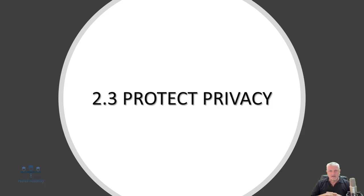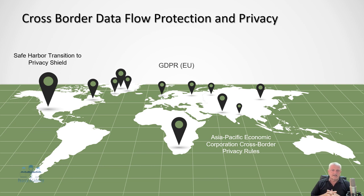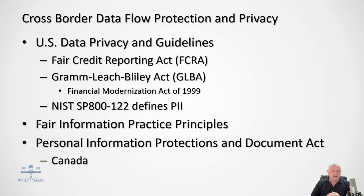Protecting the privacy of assets becomes quite difficult from a global perspective. For cross-border data flow protection and privacy: in the US, there is the Safe Harbour transition to the Privacy Shield; in the EU, the Data Protection Act (DPA) evolved into the GDPR; and in Asia, the APEC cross-border privacy rules apply. At a more granular US level, there are guidelines such as the Fair Credit Reporting Act (FCRA), the Gramm-Leach-Bliley Act (GLBA) from the Financial Modernization Act of 1999, and NIST SP 800-122 which defines Personally Identifiable Information (PII) — including name, address, and medical information.